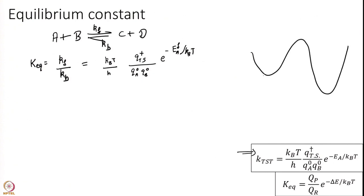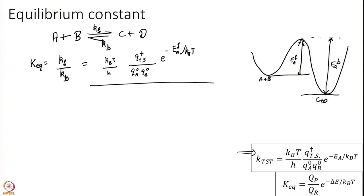I am defining a 1D surface: A plus B here, C plus D here, and the transition state here. So this is Ea forward, and I will also need Ea backward. So Kf divided by Kb is KbT over H — note that the transition state is the same for both — times Q_TS dagger over Qc0 Qd0, times e to the power of minus Ea_b over KbT.